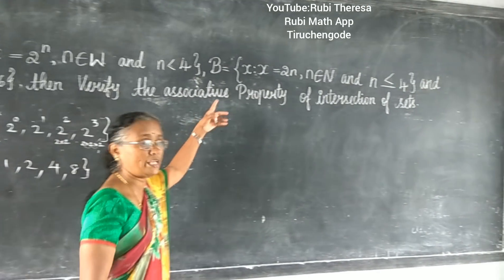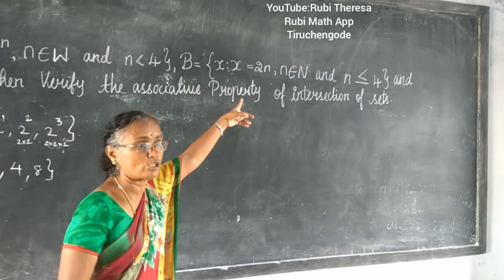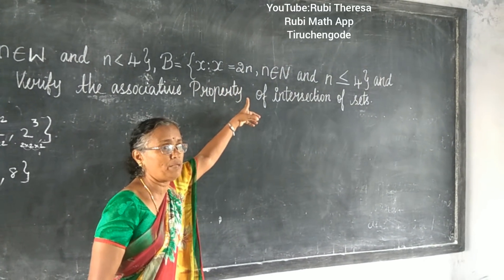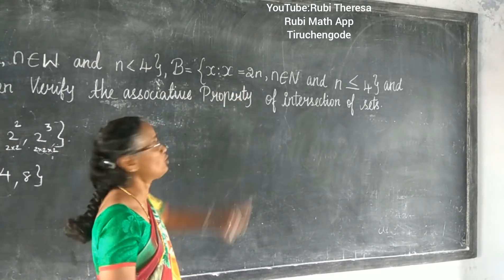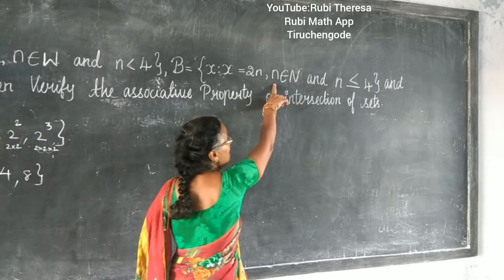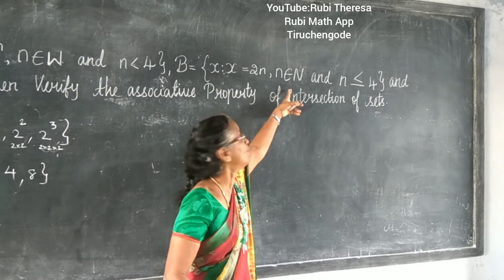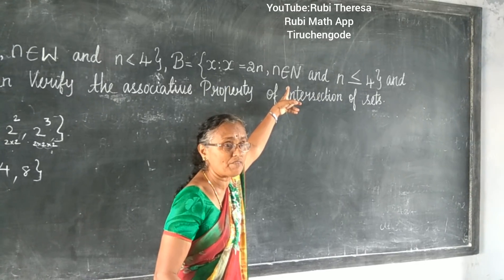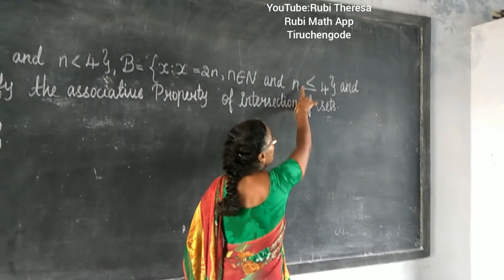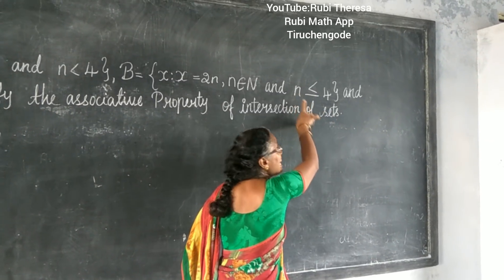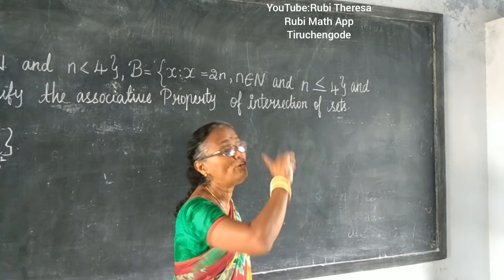Next, your set B. This is also in set builder form: X such that X equals 2N, which means 2 into N. N is an element of natural numbers, which start with 1, and N is less than or equal to 4. So N goes from 1 to 4.